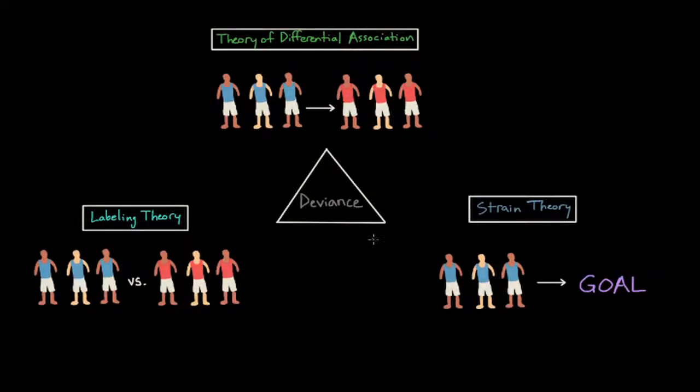Sociologists often use symbolic interactionist perspective when studying deviance. The perspective basically states that society is a product of everyday social interactions of individuals. This means that looking at how people behave in normal everyday situations helps us to better understand and define deviance.